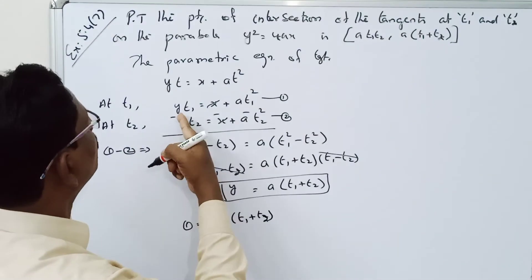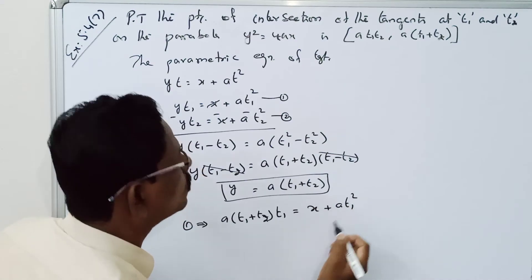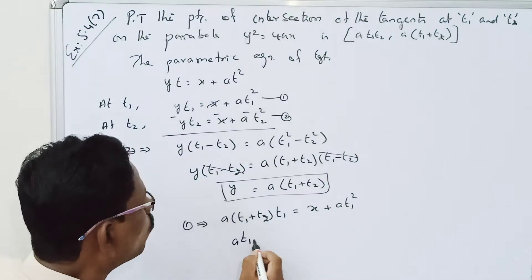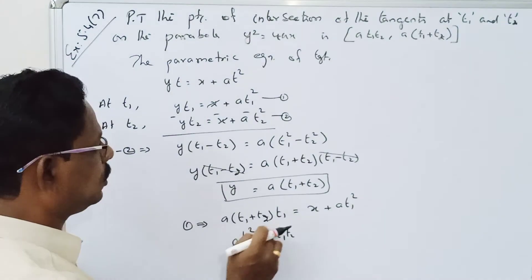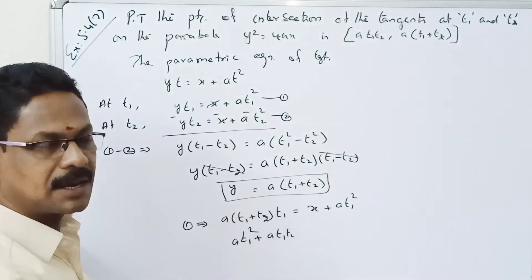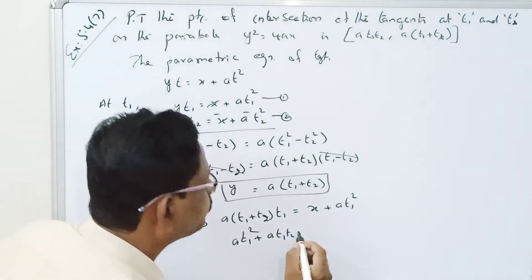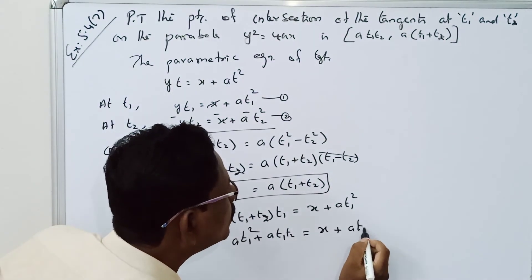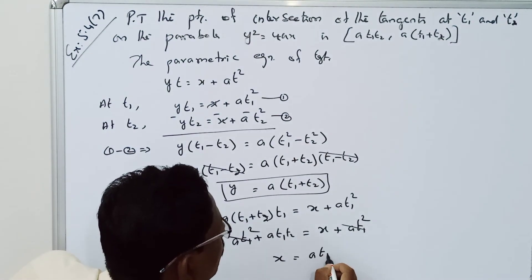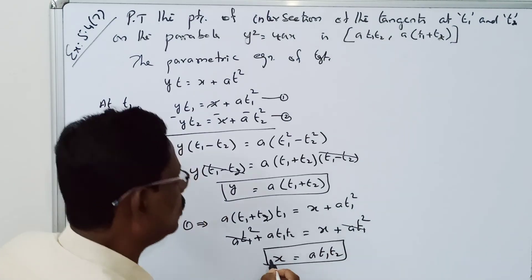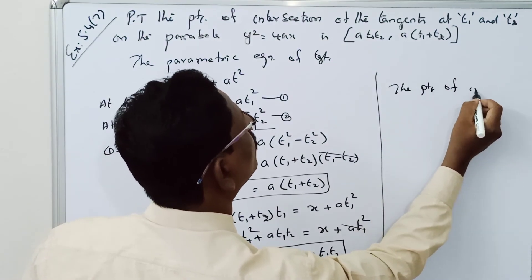Expanding the left side: at₁² + at₁t₂ = x + at₁². The at₁² terms cancel on both sides, so x = at₁t₂.